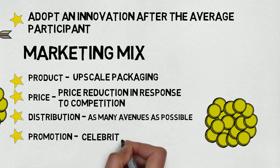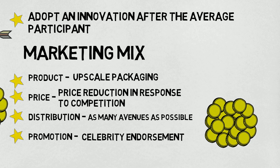The marketing mix was modified again as follows. Product: Upscale packaging with YouTube celebrity endorsement. Price: Price reduction in response to competition while avoiding a price war. Distribution: New retailers and distributors. Promotion: Celebrity endorsements.